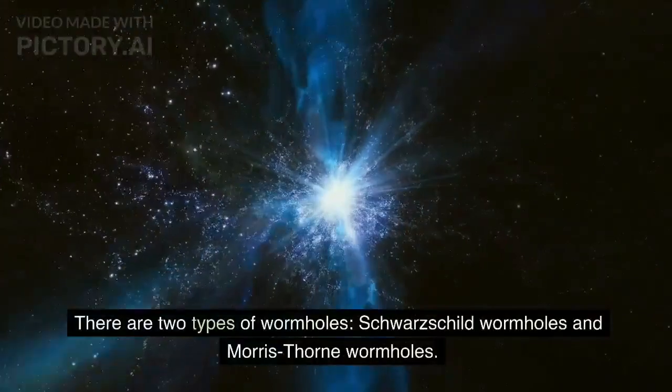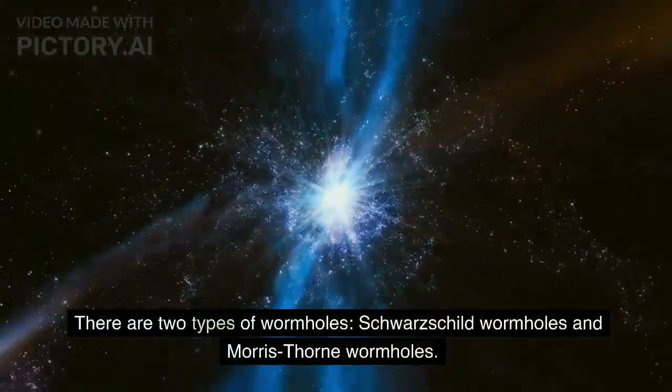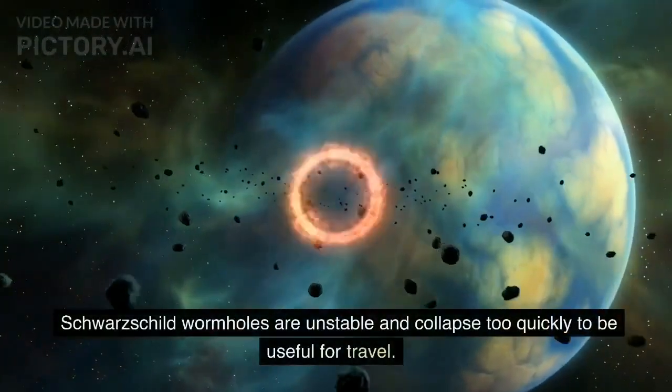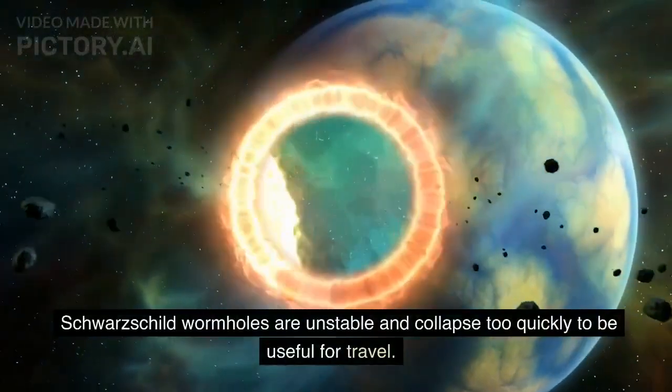There are two types of wormholes: Schwarzschild wormholes and Morris-Thorne wormholes. Schwarzschild wormholes are unstable and collapse too quickly to be useful for travel.